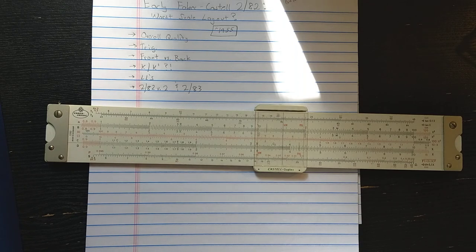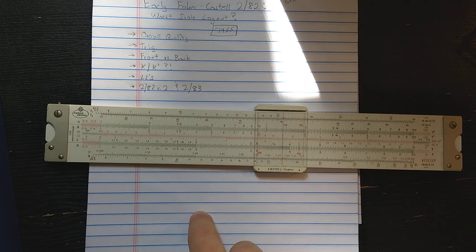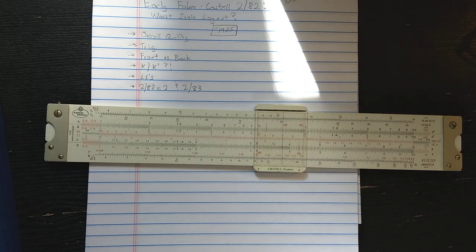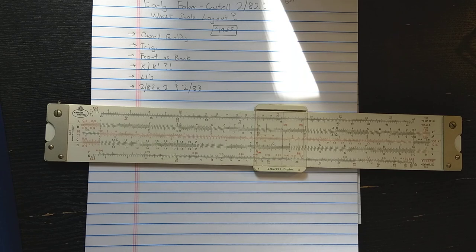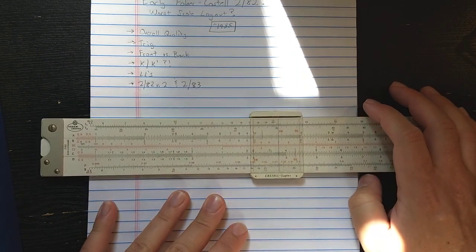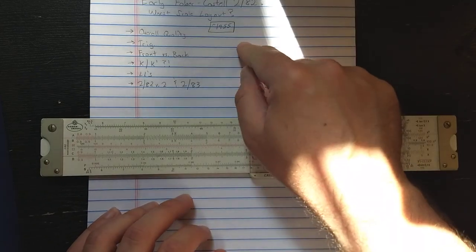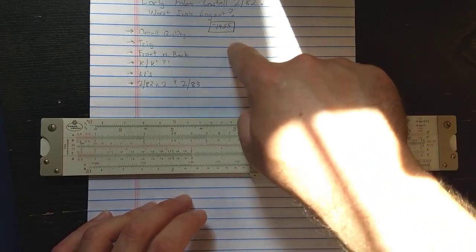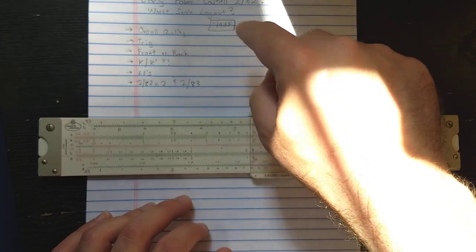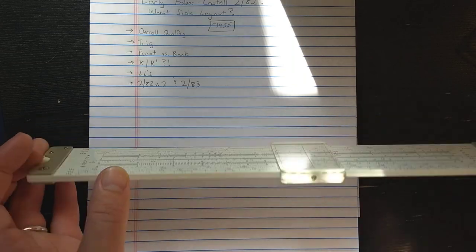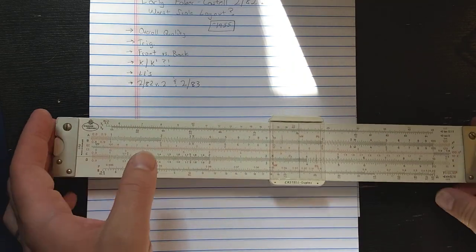I wasn't sure for a long time whether the 282 was released before the 283. So for a long time, Faber-Castell sells both of them to kind of fit slightly different markets. But, finding this 1955 manual, it only has the 282. It has the 284, the Mathema slide rule, but it doesn't have the 283. So that leads me to believe that the 282 existed in this form for a while without the 283.